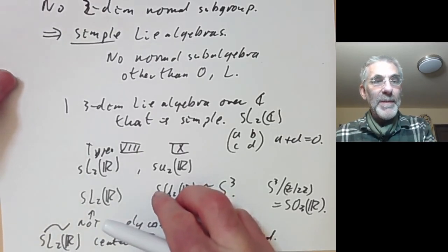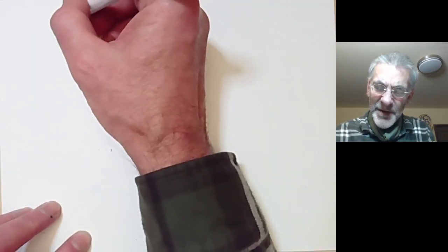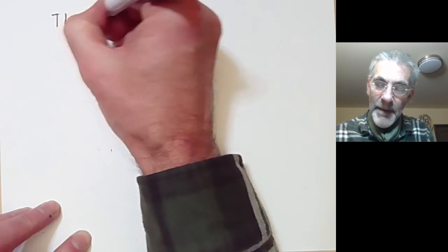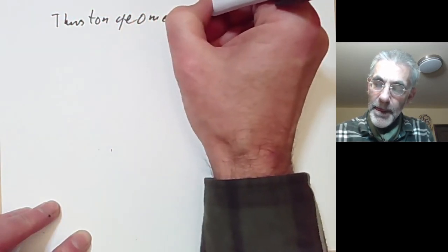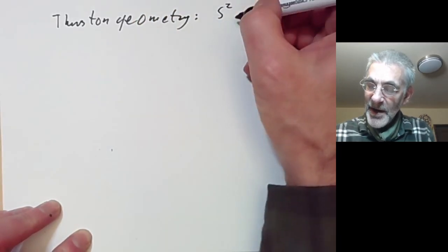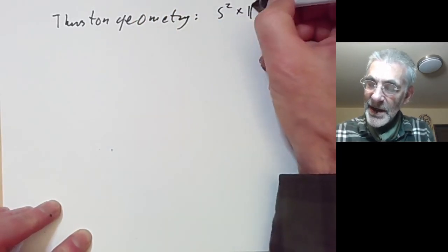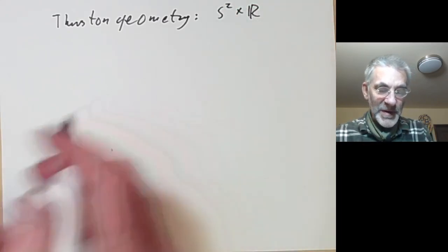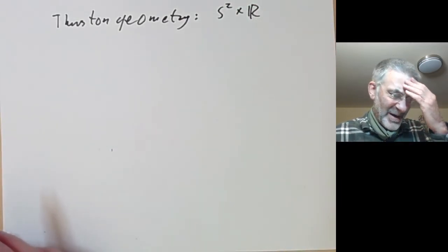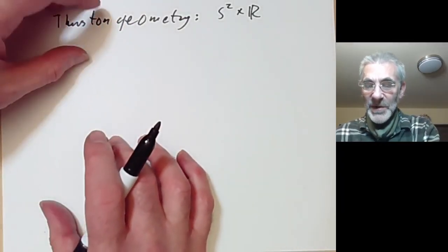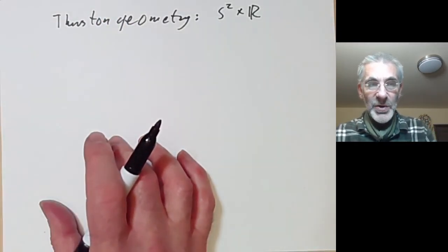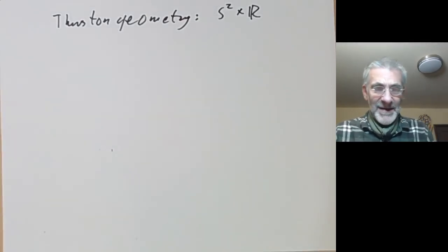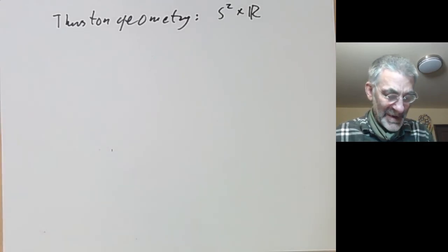That more or less gives the classification of three-dimensional connected Lie groups. There is one extra Thurston geometry based on S² × R, which very annoyingly doesn't correspond to any three-dimensional Lie group. So there's a lot of overlap between Thurston geometries and Bianchi groups, but they're not quite the same as each other.